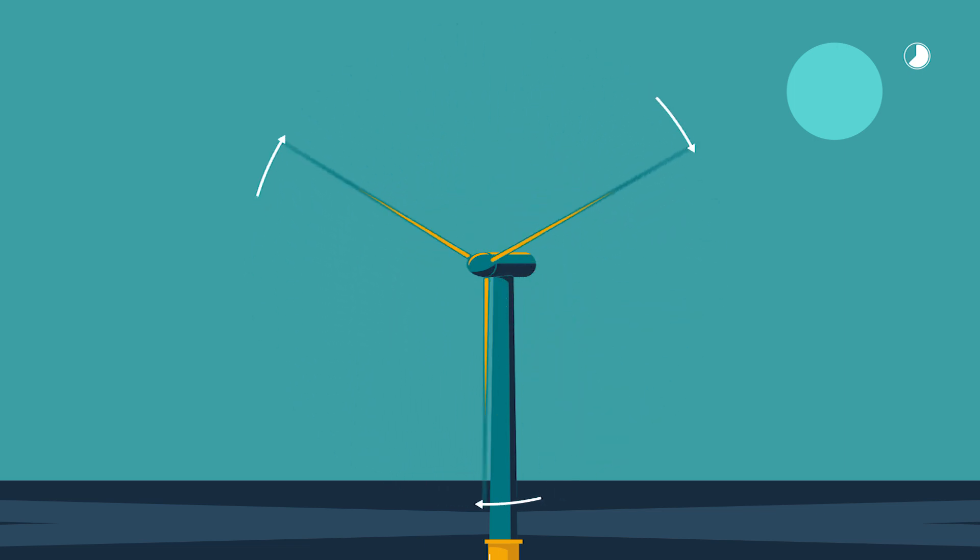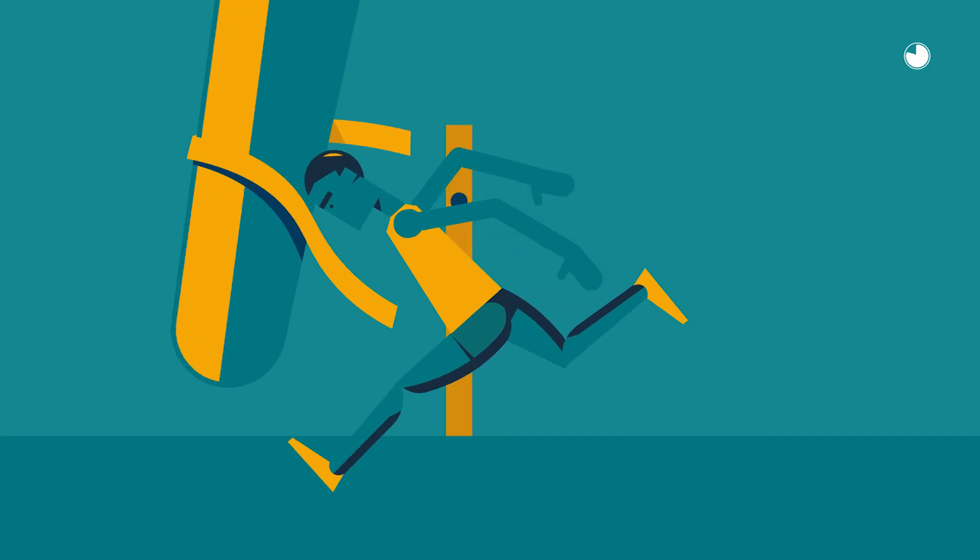But near the blade tip, the radial velocity of offshore turbines can be as high as 80 meters per second. That is 8 times faster than Usain Bolt during a 200 meter sprint.